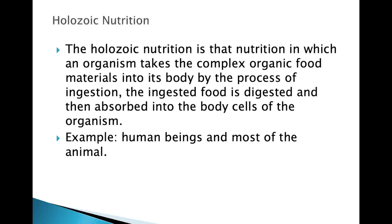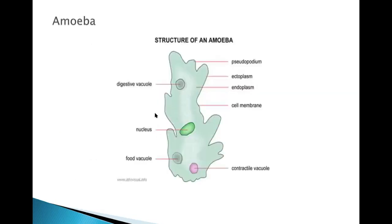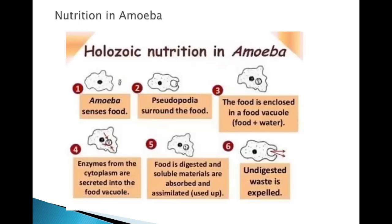Amoeba has an irregular shape. It has contractile vacuoles, food vacuoles, a nucleus, and a digestive vacuole rich in lysosomes. Amoeba follows a holozoic mode of nutrition, also called phagocytosis. We will study how amoeba takes food inside it.